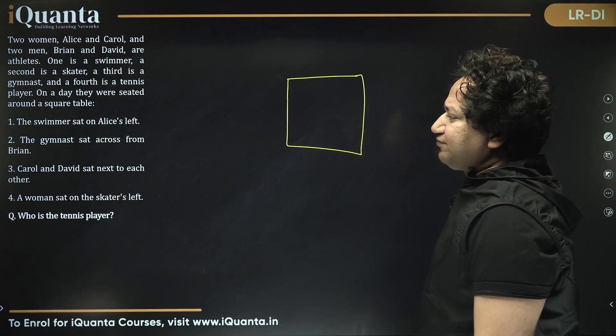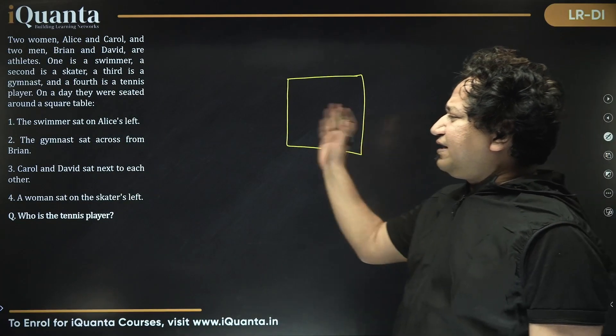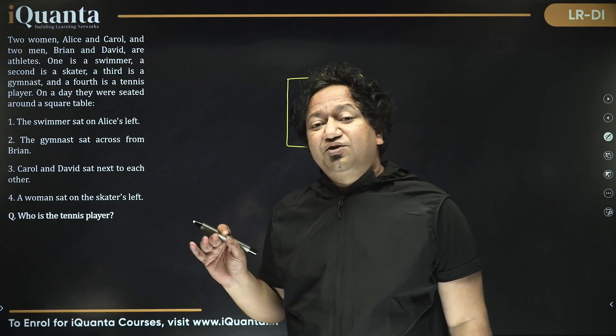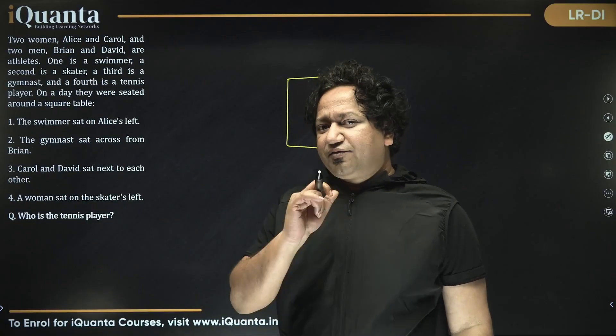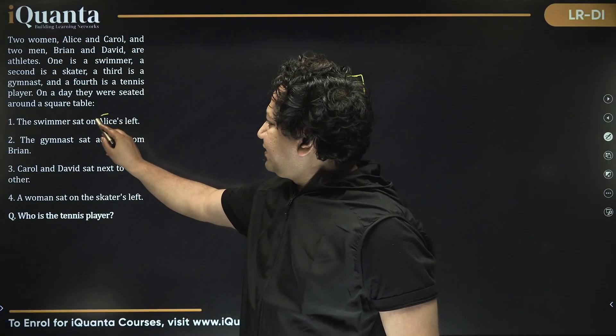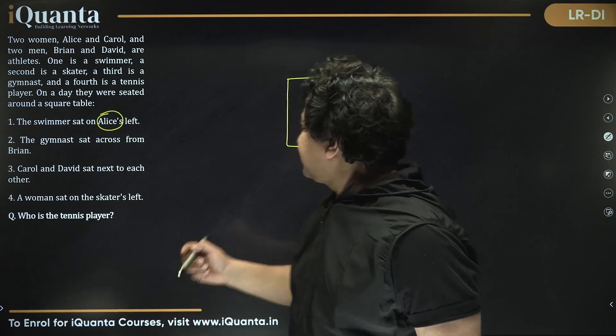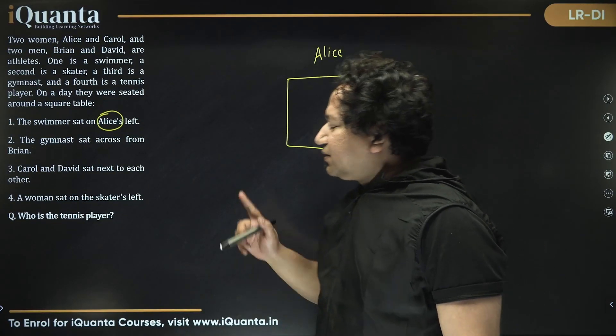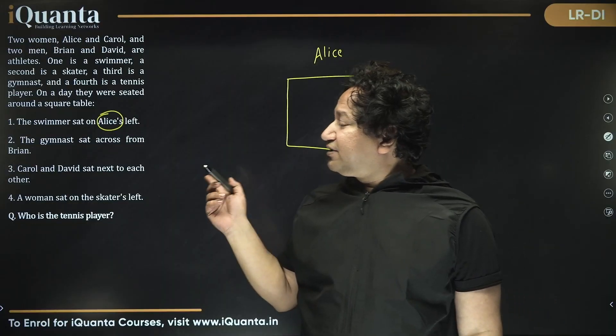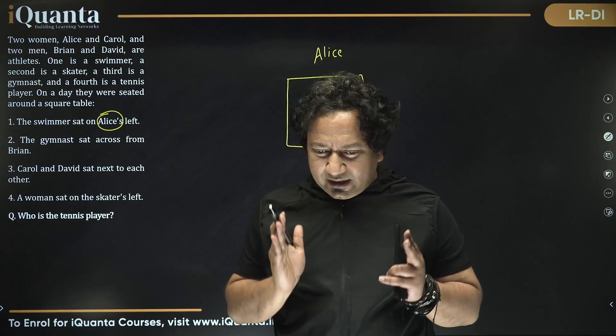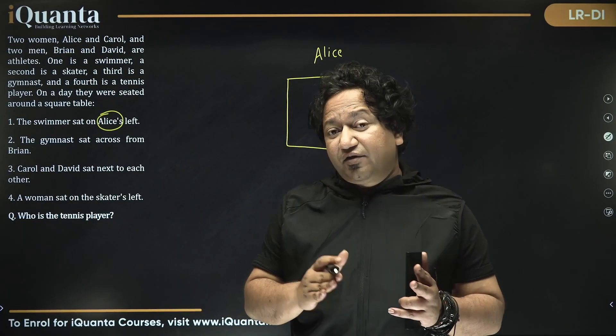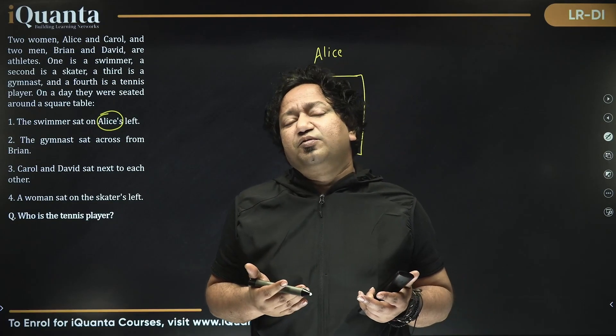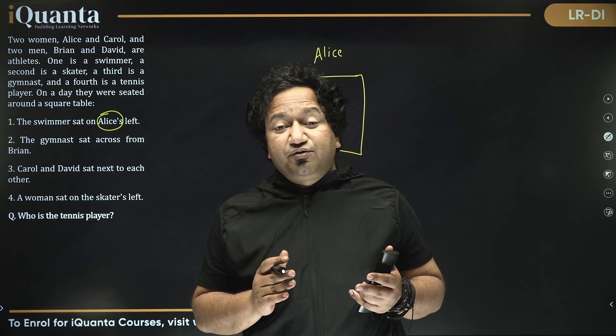The swimmer sat on Alice's left. The thing is we don't know where anyone is sitting, so in these kind of sitting arrangement questions we need to take one standard frame of reference. What if I start from Alice? Let us say Alice is sitting over here. Normally, when it's not given, we assume the people are looking towards the center of the table.